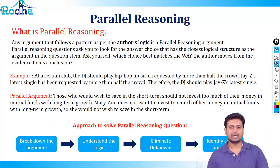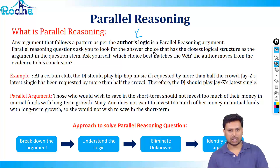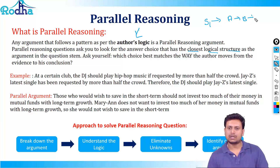The third type of question in this set is parallel reasoning. Parallel reasoning is a pattern you will have to follow across two separate logical arguments. Any argument that follows the same pattern as per the author's logic is a parallel argument. Parallel reasoning questions ask you to find the answer choice with the closest logical structure to the argument in the question — which choice best matches the way the author moves from evidence to conclusion. If a statement's logic moves from A to B to C, you apply the same logic to another statement.